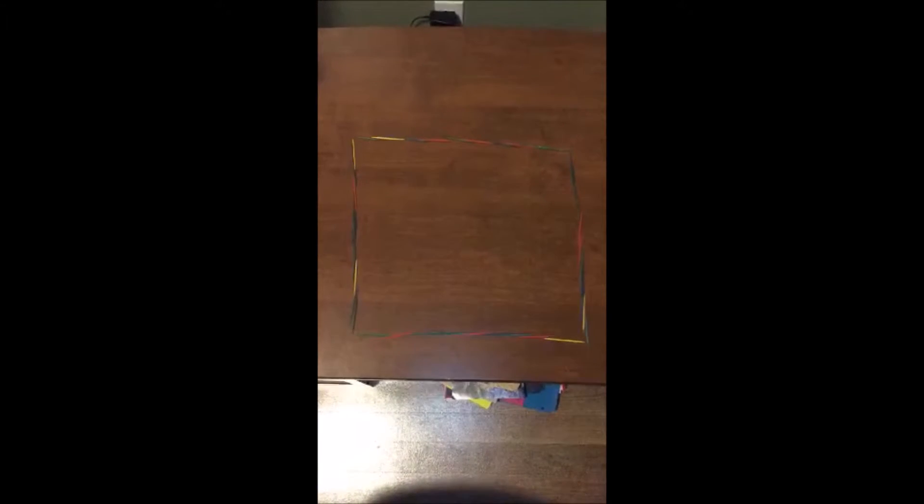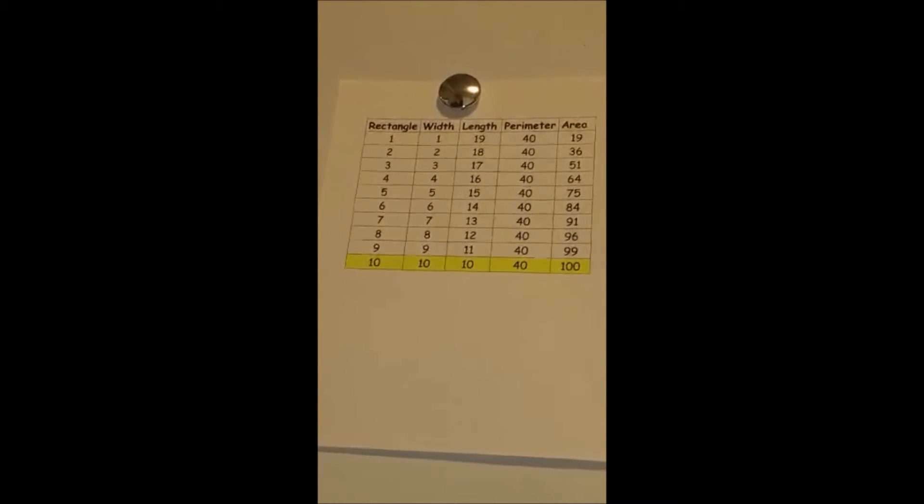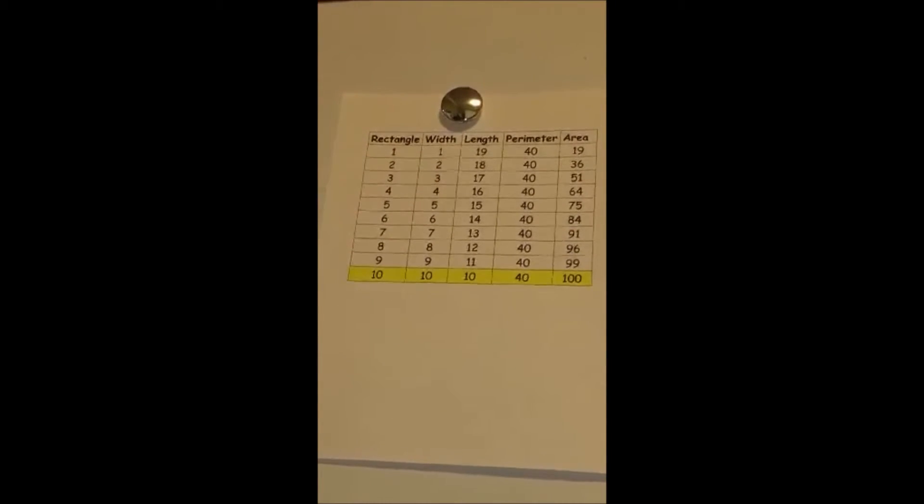The prediction for the dimensions of a rectangle with a perimeter of 40 meters that would have a maximum area would have a width equals 10 and length equals 10. Looking at the chart, the hypothesis is correct.